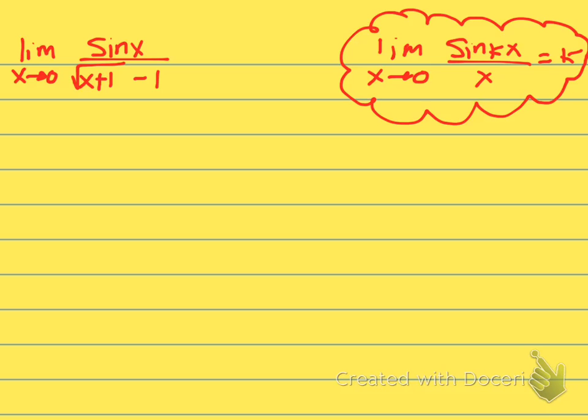You could try dividing top and bottom by X, that would be a method, but I think the most obvious thing to do here will be to multiply by the conjugate. If you go back to when we did limits of algebraic functions and rational functions, we used this method quite a bit where we multiply the top and bottom by the conjugate.